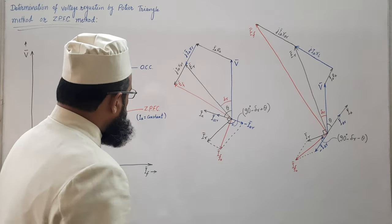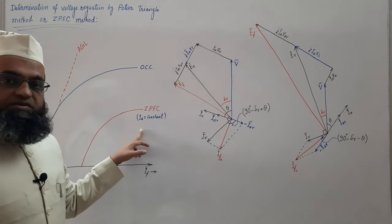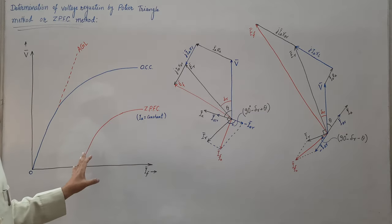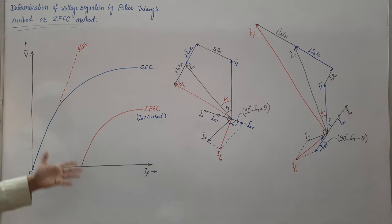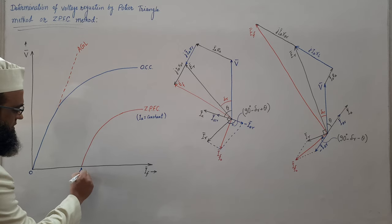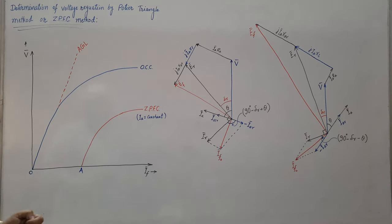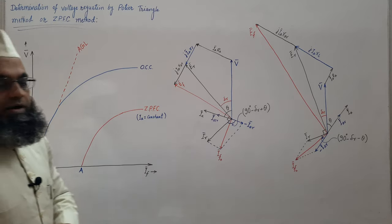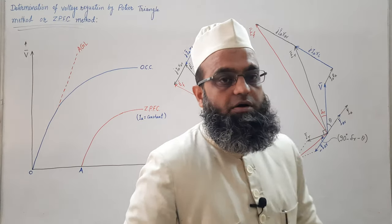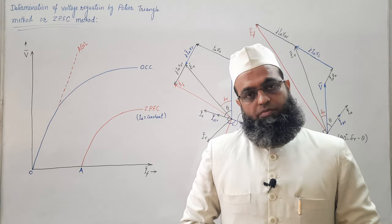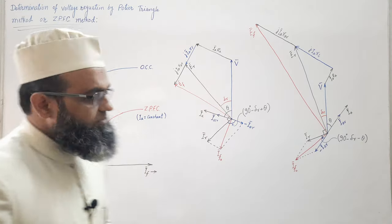Step number two: perform the zero power factor test and draw the ZPFC on the same axis. Let us mark this point as A. In the previous lecture we already discussed ZPFC, and we know that OA, the field current OA, is the field current required to overcome the armature reaction drop as well as the leakage reactance drop.